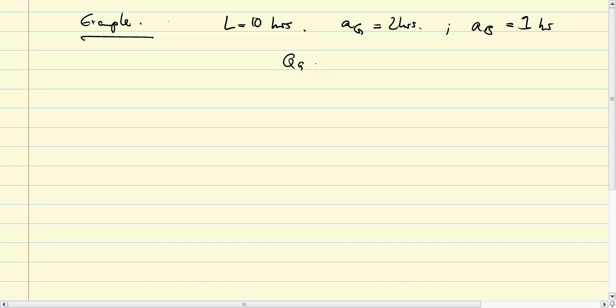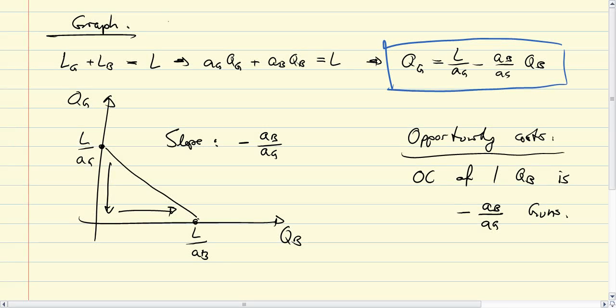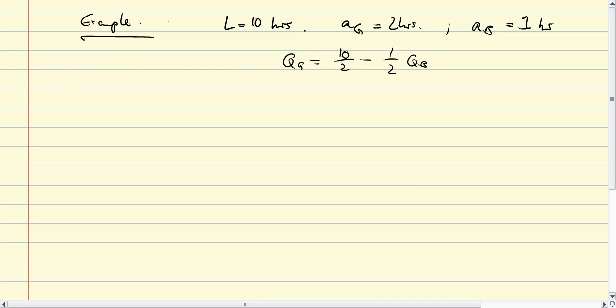With that, we get QG equal to 10 over 2 minus 1 over 2 QB. I'm just substituting the numbers in this relationship here. And that's, of course, 5 minus 1 half QB.